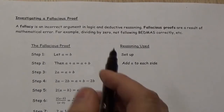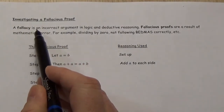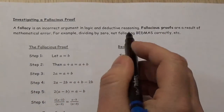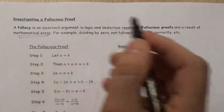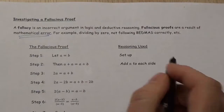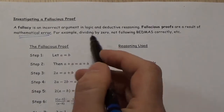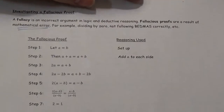Now let's take a look at investigating a fallacious proof. A fallacy is an incorrect argument in logical and deductive reasoning. Fallacious proofs are the result of a mathematical error — for example, dividing by zero or not following order of operations correctly. You'll see there are all sorts of riddles that people share, and the issue is basically what's identified here: dividing by zero or BEDMAS errors.